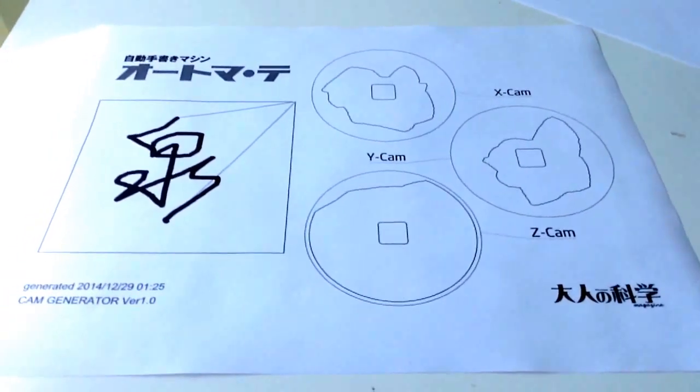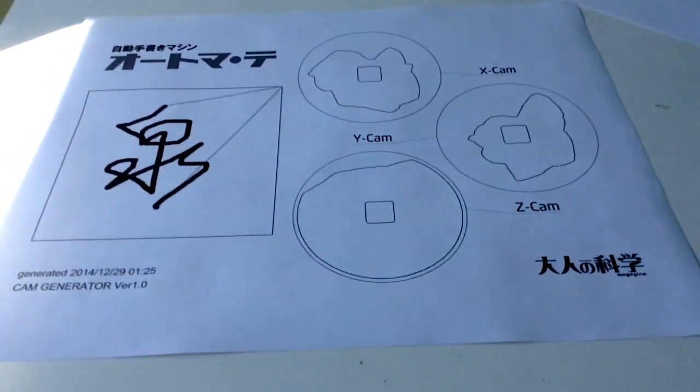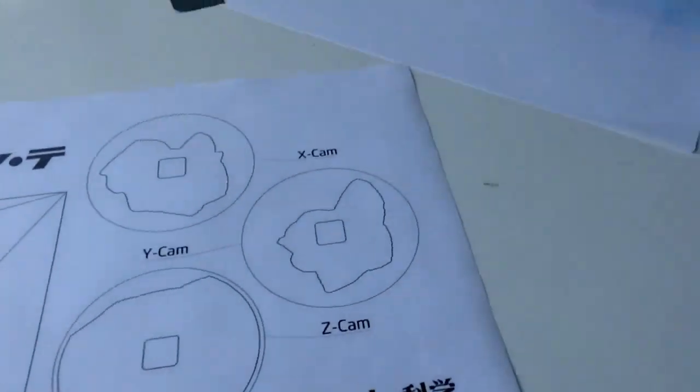So then you just use 1-2-3-D design, and you sketch them out, and then you print them. So we're going to go to the moment of truth. This is the auto-writing machine.